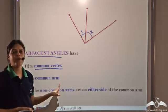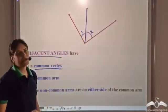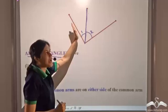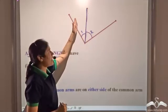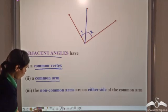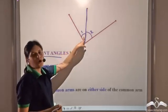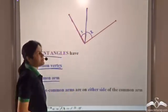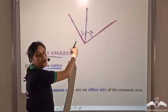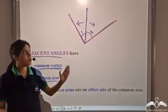Adjacent angles also have a common arm. The arm of angle one is common to the arm of angle two — that is, they share one arm. Also, the non-common arms are on either side of the common arm. The non-common arm of angle one and the non-common arm of angle two lie on opposite sides of the common arm.